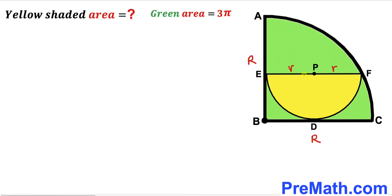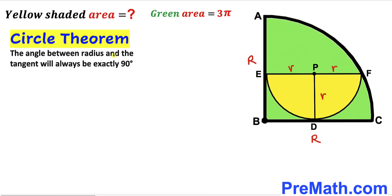In this next step I am going to connect center P with the point of tangency D. We can observe that PD is the radius of the yellow semicircle as well, so I'm going to label this one as lowercase r. Now let's recall the circle theorem.